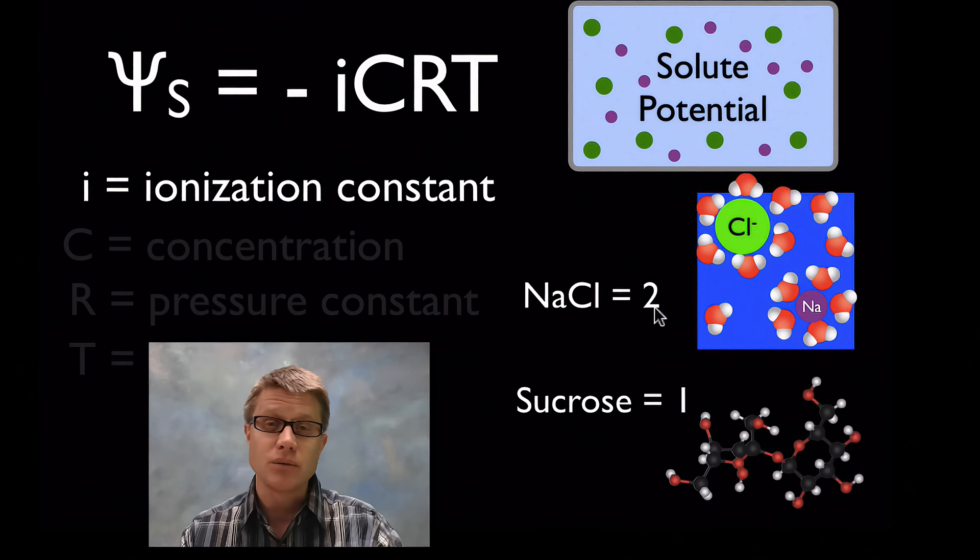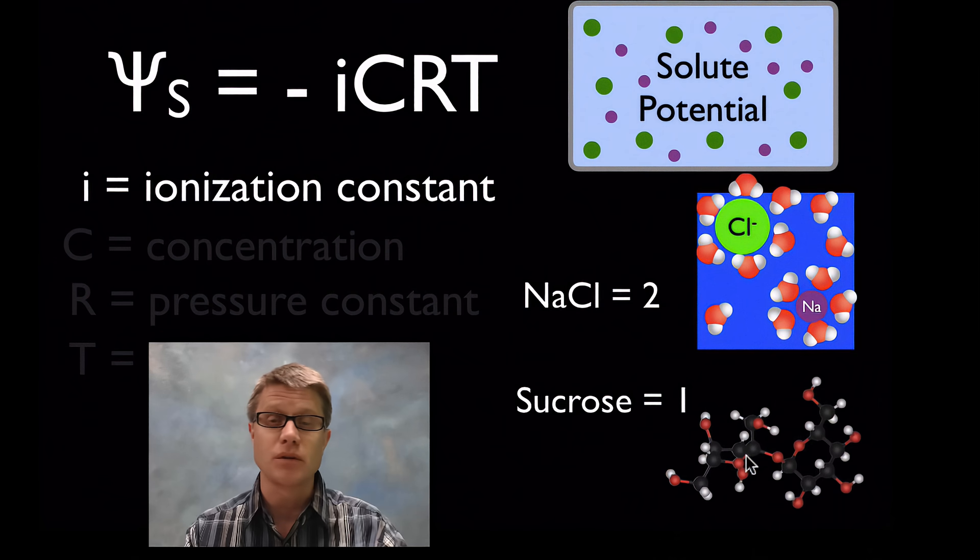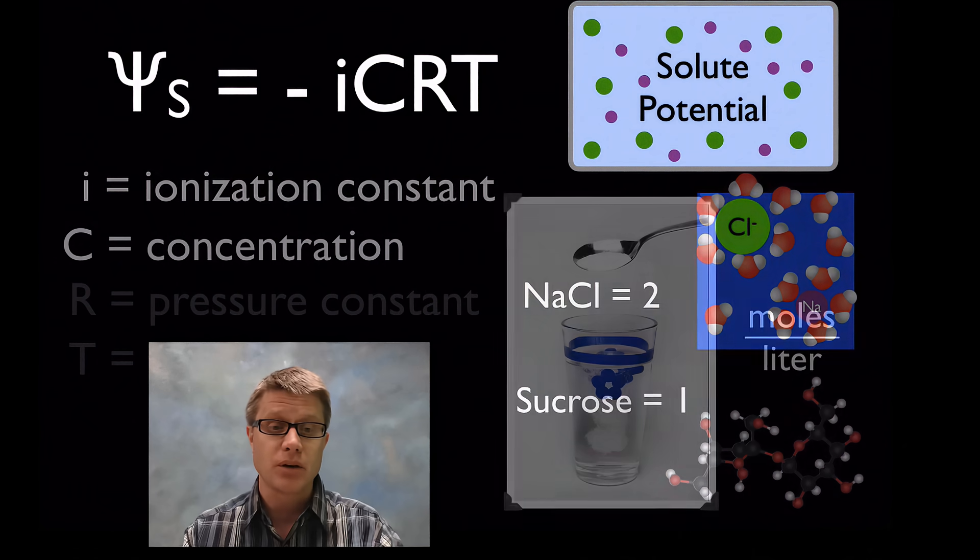Now it's really easy if we're dealing with something like sucrose, which is just table sugar, that's going to have an ionization constant of one. Because when you add sugar to water it just stays as sugar, so we don't have to multiply anything. So if we increase the ions, we're increasing the I and that's going to give us a lower solute potential.